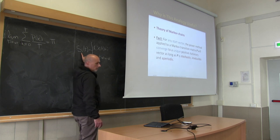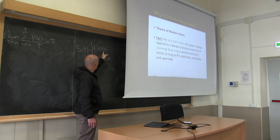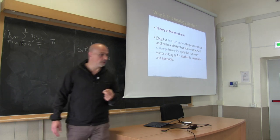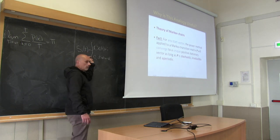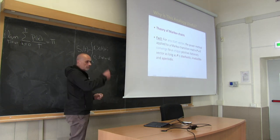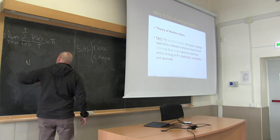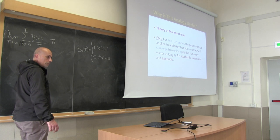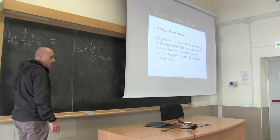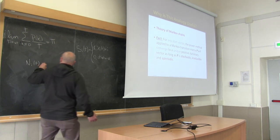Let X_t be the state of the Markov chain at time t — a binary variable that has value one if the random walk is in state i at time t, and zero otherwise. If I want to know how many times the chain was in state i from time zero to time t, I call this n_i(t). This is trivially equal to the sum of these indicator variables.